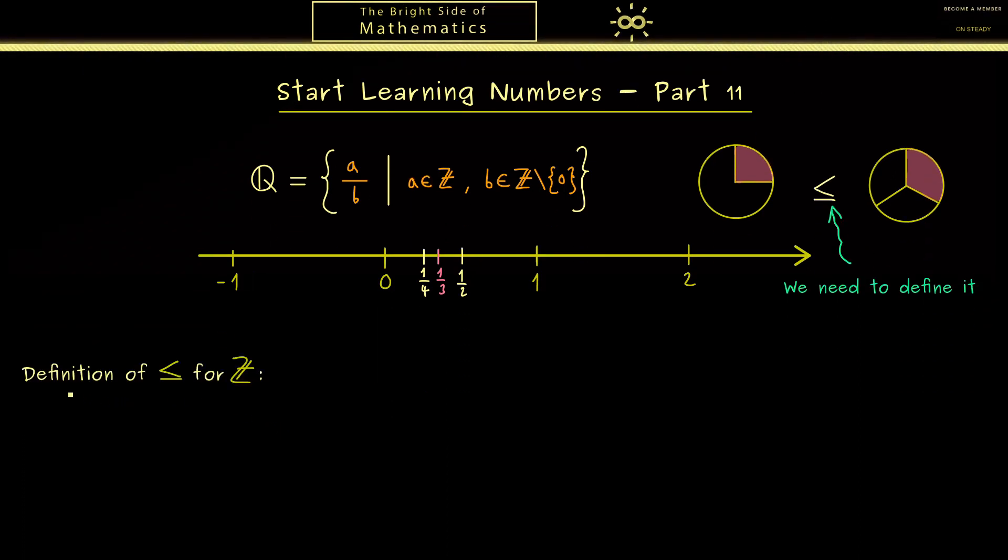First, let's recall how the ordering was defined for the integers. Indeed, it's completely the same definition we had for the natural numbers. Hence, a is less or equal than b if there exists a k in N_0 such that a plus k is equal to b. Of course, this makes sense because adding positive numbers means we jump to the right.